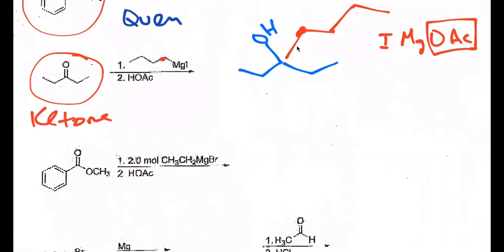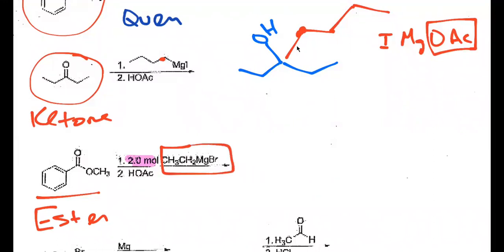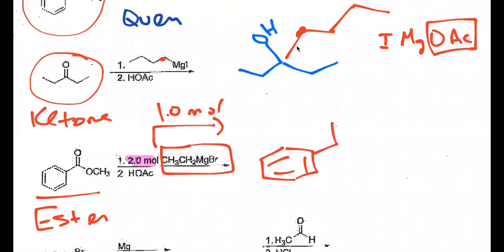What about the next one — what are we starting with? Start with an ester, right — and notice the stoichiometry: two moles of this Grignard. What does that mean when I do that to an ester? If I add one mole — let's just draw the product. If I do one mole of Grignard, I should get a ketone, and then you get the alcohol after the acid quench.